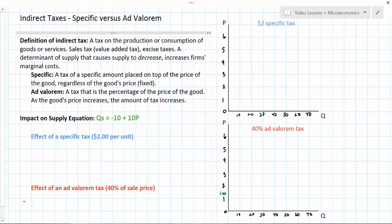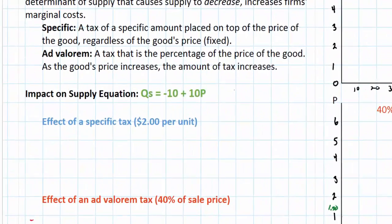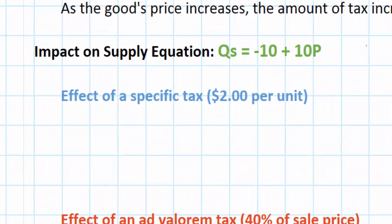We're going to assume that we have an equation representing the supply of a good of Qs equals negative 10 plus 10P. Before I calculate the effect of the specific $2 tax and the 40% ad valorem tax on the supply of this good, I'm going to graph the original supply curve.